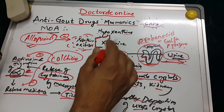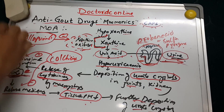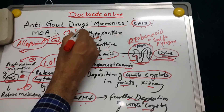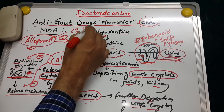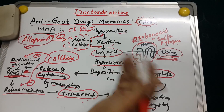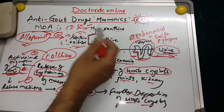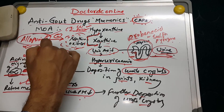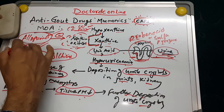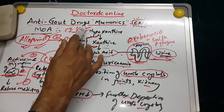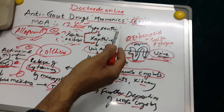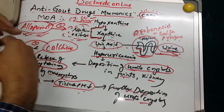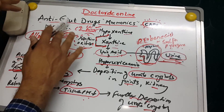Regarding allopurinol's contraindications: it is contraindicated in children and pregnancy — that is very important to remember. Common side effects include nausea, vomiting, and diarrhea. Importantly, allopurinol is also contraindicated in renal disease and liver disease.